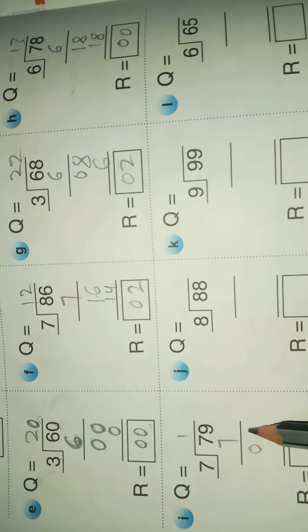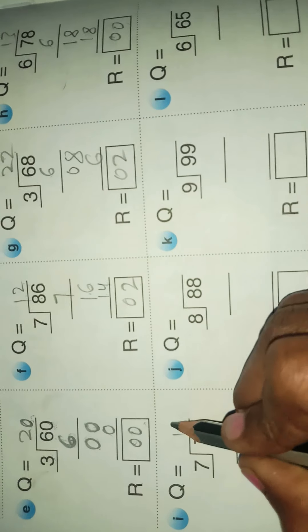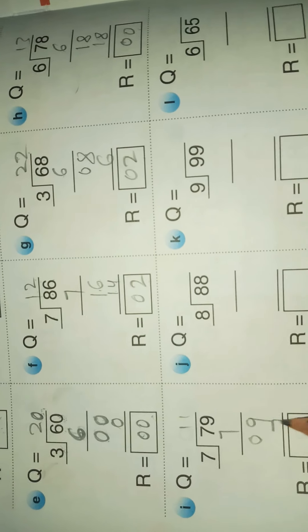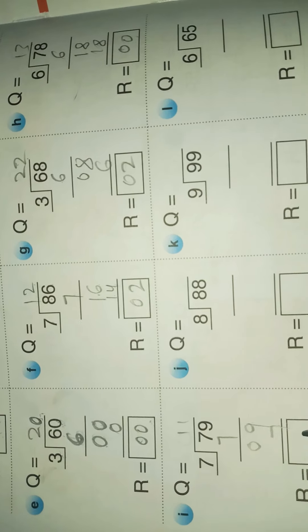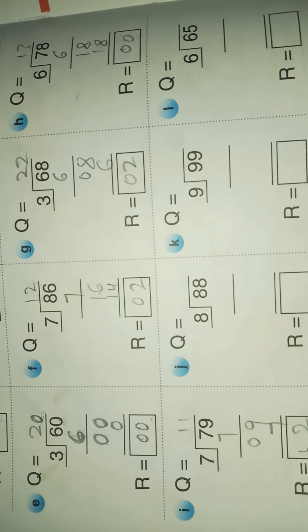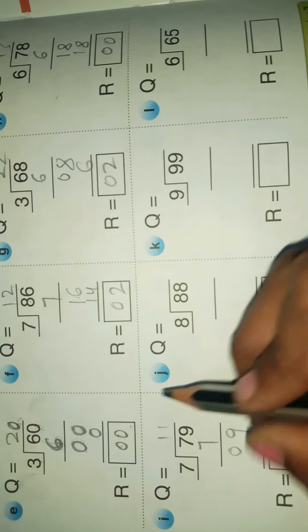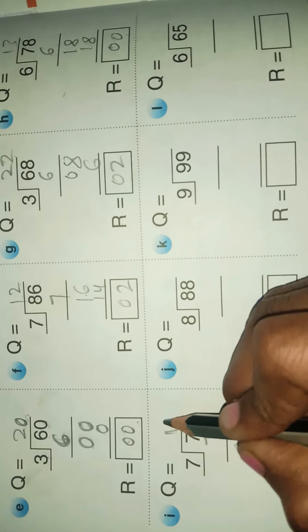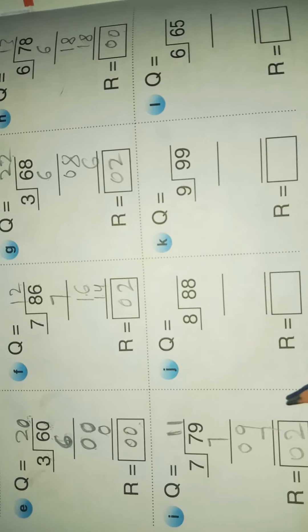7 minus 7 is 0. Bring down 8. 7 minus 7 is 0. The quotient is 11.